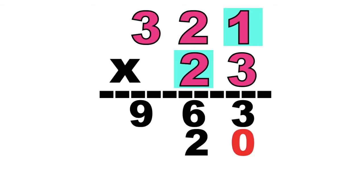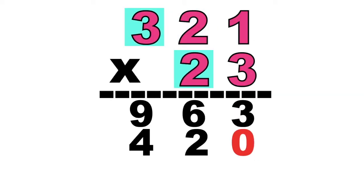Is that clear? Let's proceed to the next one. 2 times 2 equals? Very good, children. It's 4. Next, 2 times 3 equals? Fantastic! It's 6.